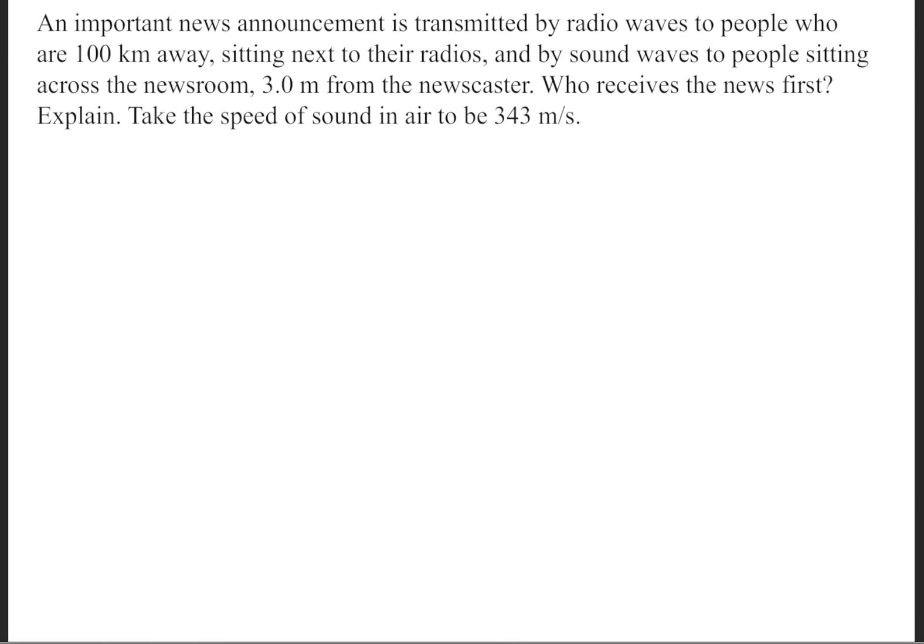We need to figure out who receives the news first — the people at home listening on the radio, or the people right in the room listening to the newscast. To do this, we compare the times against each other using the velocity equation. Velocity is simply the distance divided by the time.